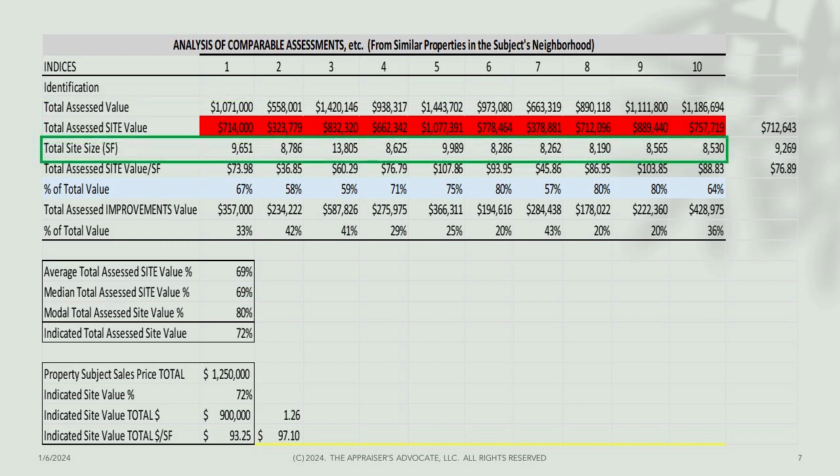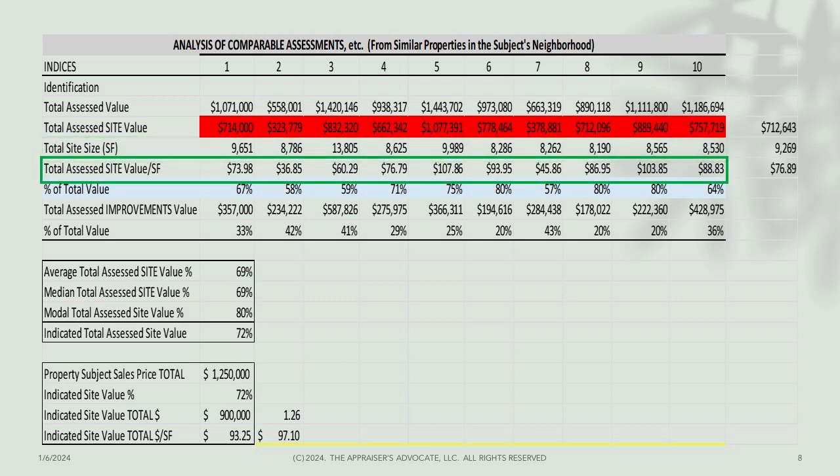Next, the grid lets you enter the site size in square feet — this is more for comparison rather than analytics. As you can see on the grid, the site sizes are typically between 9,000 and 9,500 square feet. If you selected a property with a 15,000 square foot size, you'd probably want to eliminate it, since the two aren't comparable. Next, the spreadsheet calculates the site assessment per square foot. Again, this is more for comparison than concluding a value, since at this point we're dealing with assessed values, not market value.